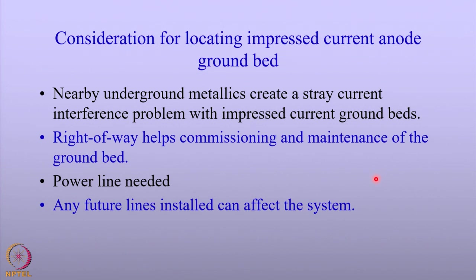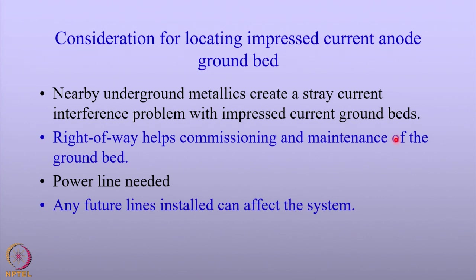The location of the anodes depends upon four aspects. The location should be such that it does not create any stray current corrosion interference with nearby metallic structures. It is important that the anodes are regularly maintained, so the right of way to reach these anodes is very important. Securing right of way is an essential part of locating the anode ground bed.